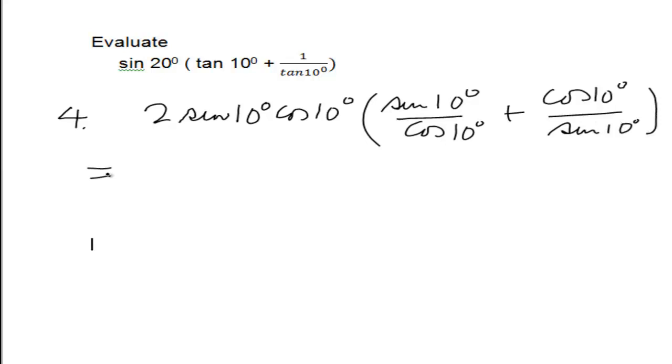And 1 over tan 10° is the same as the opposite: cos 10° over sin 10°. So now when we multiply out, you'll find the cos 10° will cancel off. So I will have 2 sin² 10°. Let me keep the 2 outside as well so it will be useful.